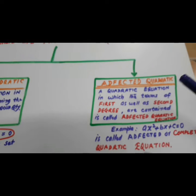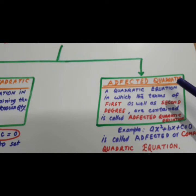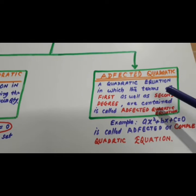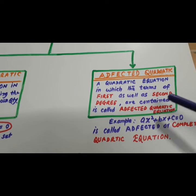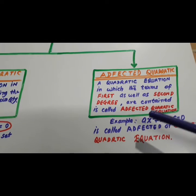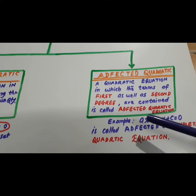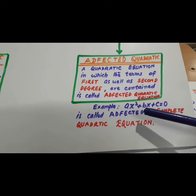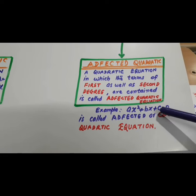What is a defected or complete quadratic equation? A quadratic equation in which the terms of the first as well as second degree are available, are contained in this, is called quadratic equation. Now, look here.